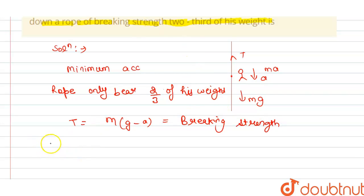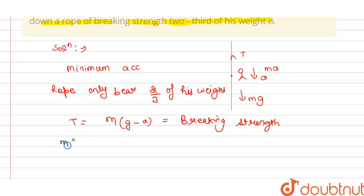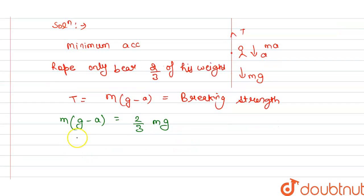So from this we can write here m into g minus a is equal to two by three m into g. His weight is mass into gravity, so from this we get acceleration is equal to g minus two by three g.